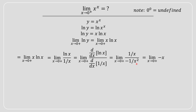We can then simplify and cancel out the terms, and rewrite the limit as shown on screen. From here we can substitute x = 0 and evaluate — the limit comes out equal to 0.